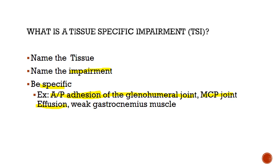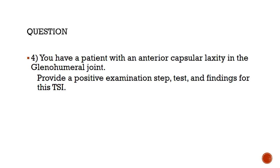There are some other examples. An adhesion is important because students often get confused — we don't know exactly where the adhesion is, so we name the direction in which we detected it. When doing an AP glide and getting an adhesion end feel at the glenohumeral joint, the TSI would be a posterior-directed adhesion of the glenohumeral joint. For swelling detected within the MCP joint, the impairment is effusion, and with data positive for only the second MCP joint, you'd specify second MCP joint effusion. Please answer question four before moving on.